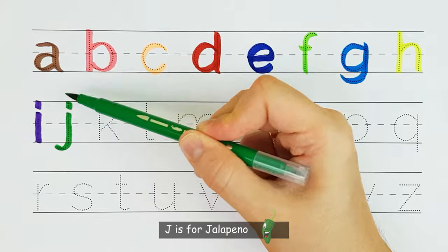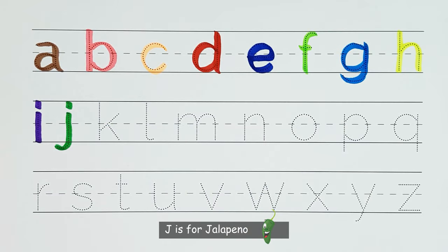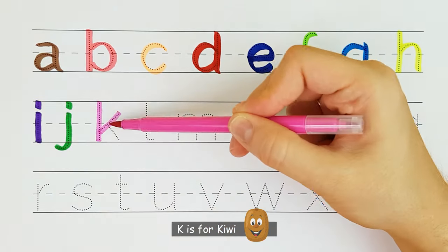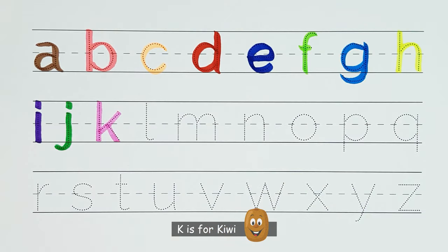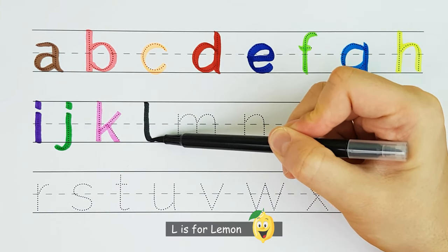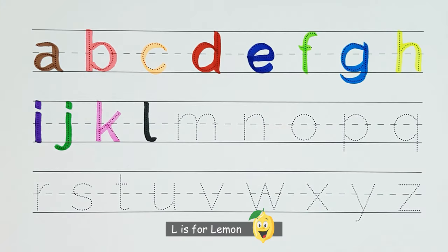J. J is for jalapeño. J. K. K is for kiwi. K. L. L is for lemon. L.